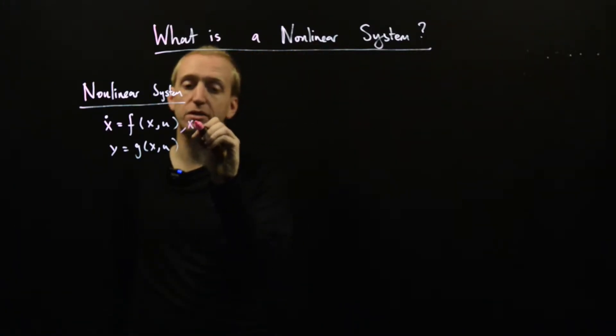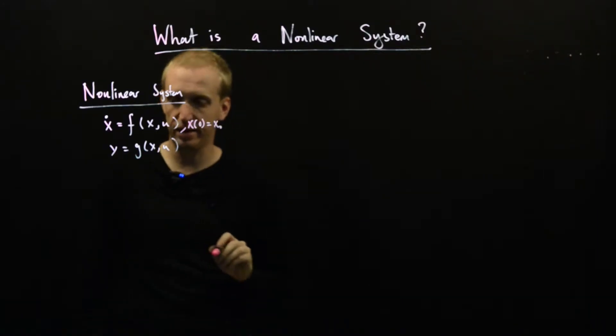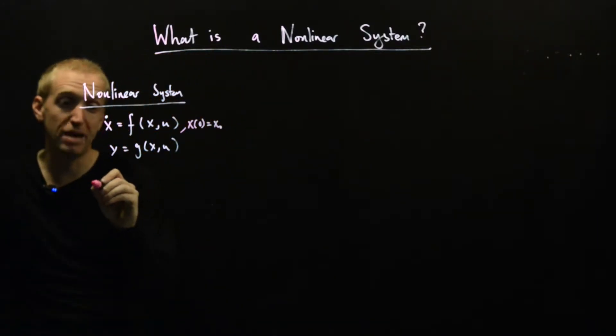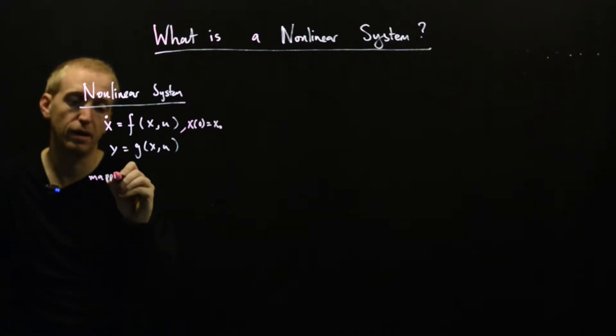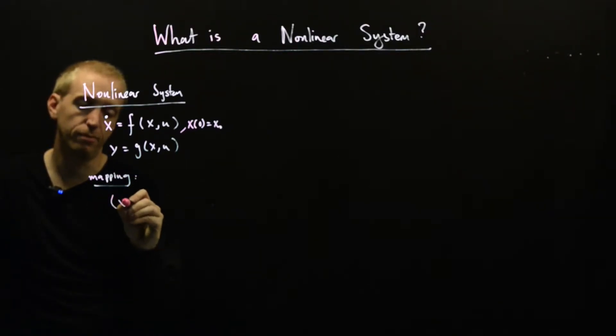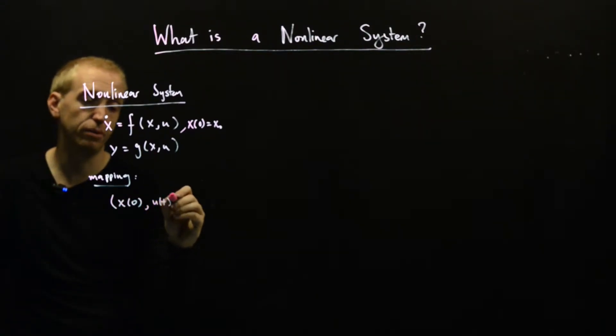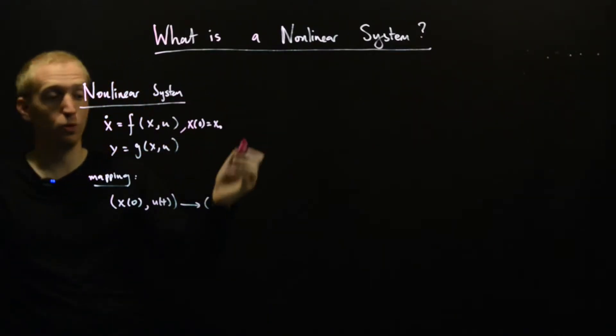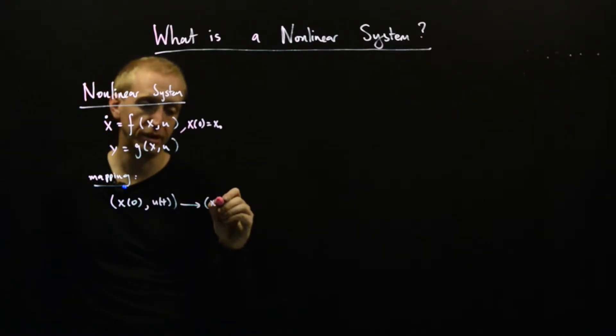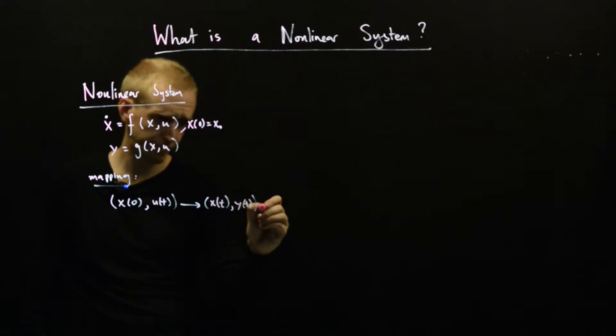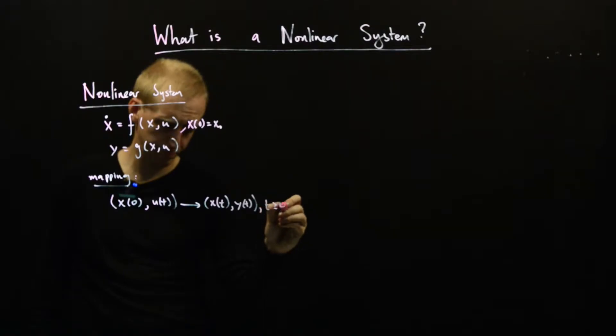If we just write our initial condition again here, we can think of this as a mapping in exactly the same way. So we go from our value of the state at time t equals zero, our set of inputs u, and our differential equation will make some prediction about what x is going to be and y is going to be in the future.